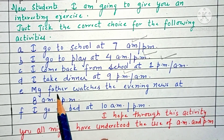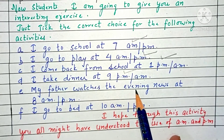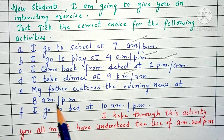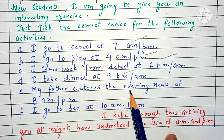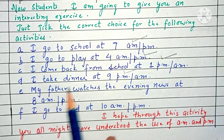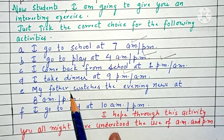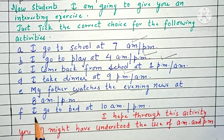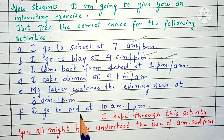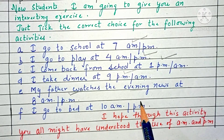Part E: My father watches the evening news at 8 AM or PM. It is evening, so the correct option is 8 PM. Part F: I go to bed at 10 AM or PM. It is sleep time, so it should be 10 PM.